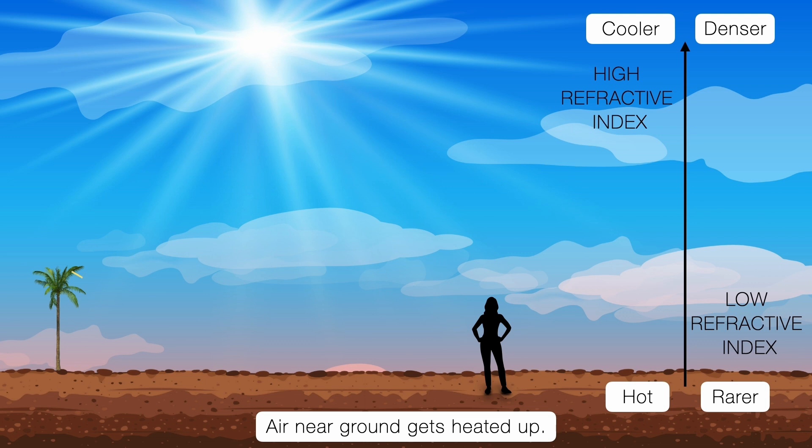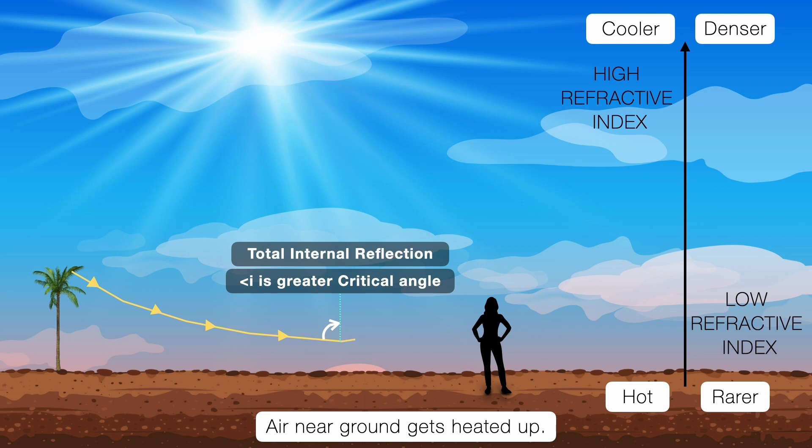And when it is close to the ground, the angle of incidence becomes larger than the critical angle. What happens then? Total internal reflection. Light just bounces back. It reflects upward, traveling back into the cooler layers and finally reaching the observer's eye.